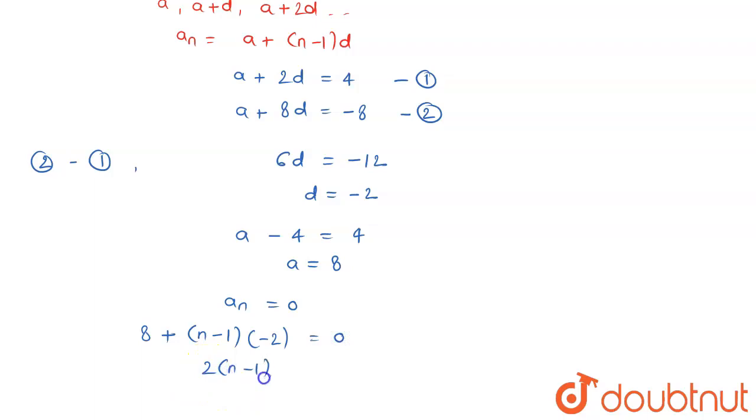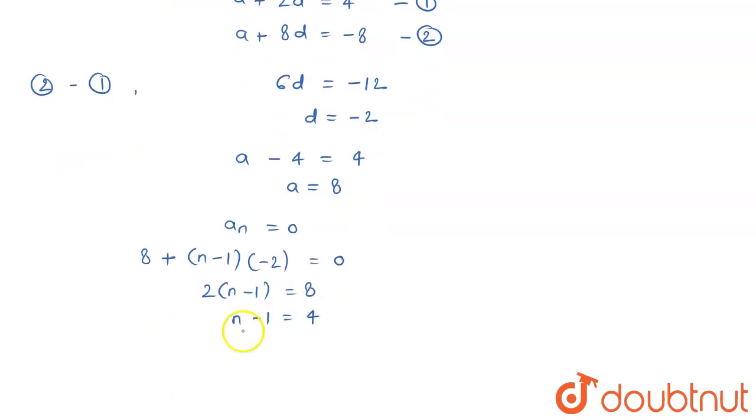From here you can say 2 into (n - 1) equals 8, or the value of (n - 1) is 4, and from here you can find out the value of n, which is going to be 5.